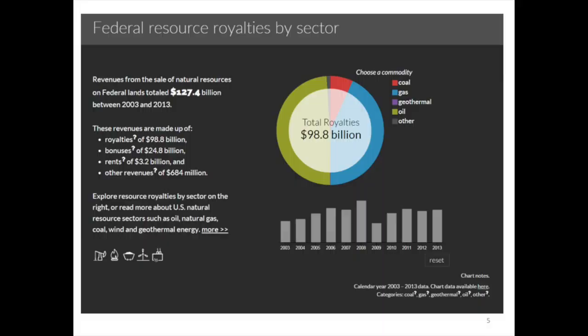When you go on the website, one of the first screens that you will see describes our federal resource royalties by sector. This information can be sorted by commodity and by year. When you click on each of these commodities, the number changes in the middle of the screen so that you can immediately see the impact in terms of the revenues. You can also sort by year to see what revenues were generated.